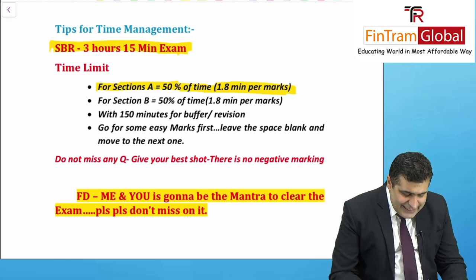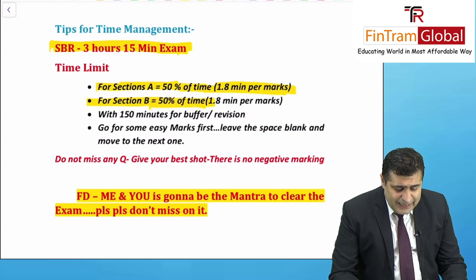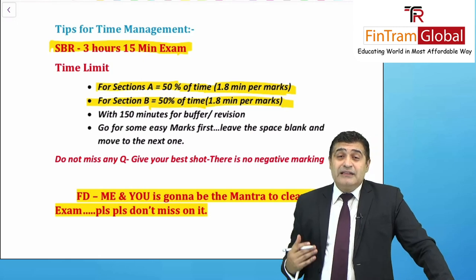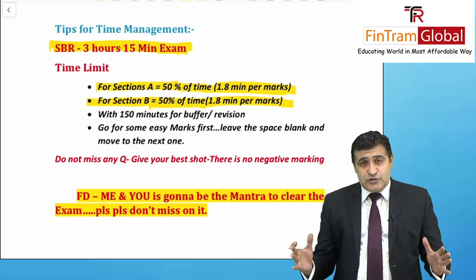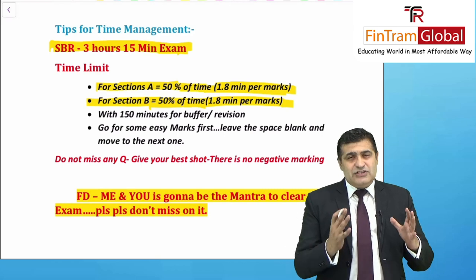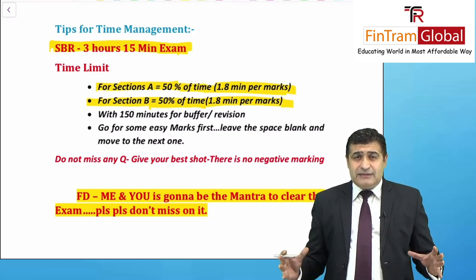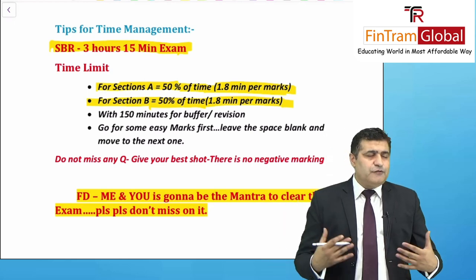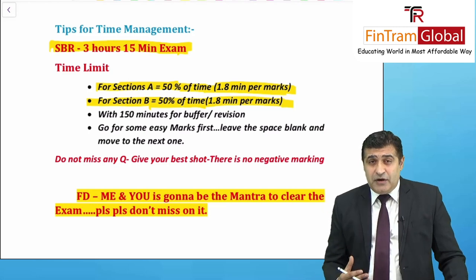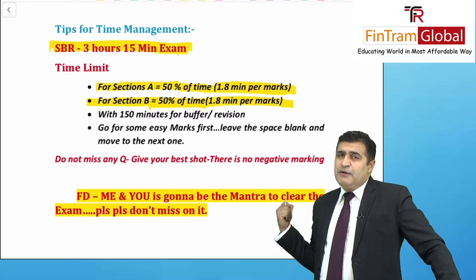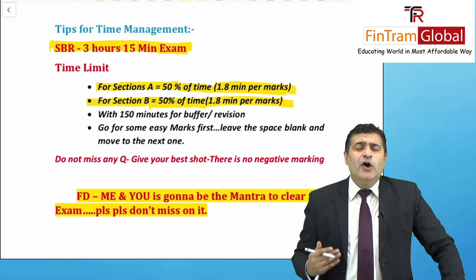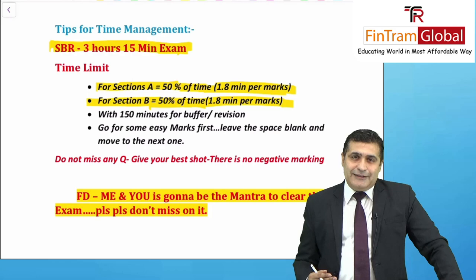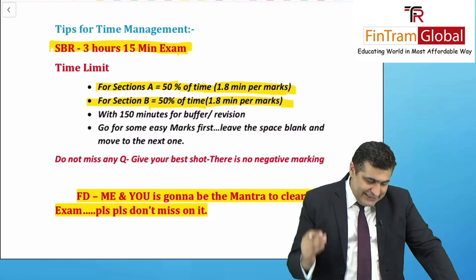For Section B again, 50% of the time and 1.8 minutes per mark is what you should spend. You have four questions total — two in Section A and two in Section B. Bifurcate the time: 1.5 hours for Section A, 1.5 hours for Section B. You can work backwards from there, but 1.8 minutes per mark really fits for any exam and is what you should work with.